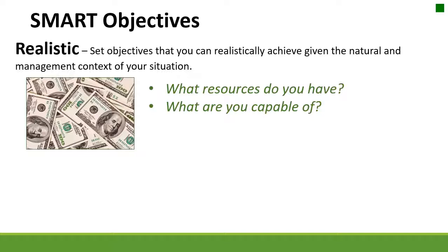The R in SMART refers to realistic. We want to set realistic objectives given the natural state we're in, considering environmental factors and the management context of our situation. We want to ask: what resources do we have? This includes land, human capital, and economics — but also what are we capable of in terms of skills, ability, and knowledge.